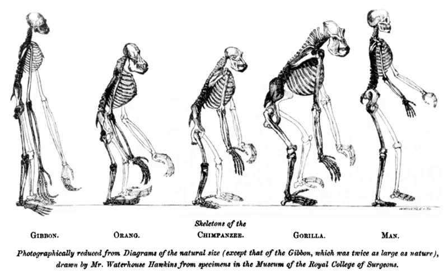Natural selection is one of the cornerstones of modern biology. The term was introduced by Darwin in his groundbreaking 1859 book On the Origin of Species, in which natural selection was described by analogy to artificial selection. The concept of natural selection was originally developed in the absence of a valid theory of heredity; at the time of Darwin's writing, nothing was known of modern genetics. The union of traditional Darwinian evolution with subsequent discoveries in classical and molecular genetics is termed the modern evolutionary synthesis. Natural selection remains the primary explanation for adaptive evolution.